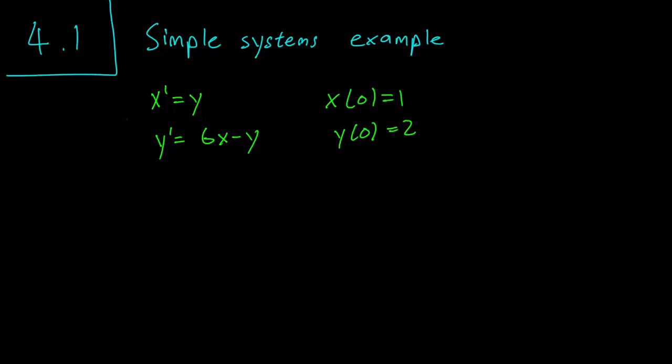Anyway, so we start, as I discussed in the last video, by taking the derivative of the first equation to get x double prime equals y prime, and this is going to be equal to 6x minus y by the second equation.